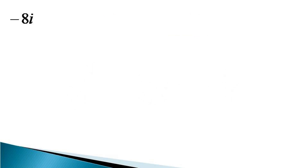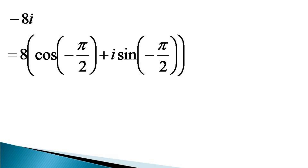To evaluate the square root, we represent minus 8i in polar form, which becomes equal to 8 into cos(−π/2) plus i sin(−π/2).